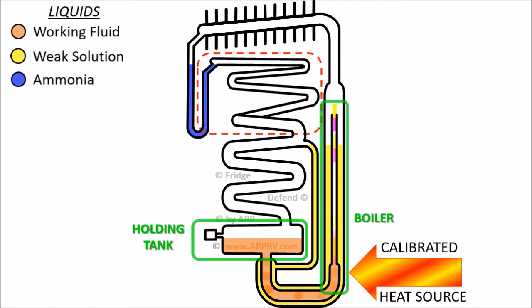Therefore, the working fluid flows from the holding tank to the boiler to supply ammonia-rich fluid to drive the pump. From the top of the pump tube, the liquid weak solution and ammonia gas are separated into two flows. First, we will follow the liquid weak solution.